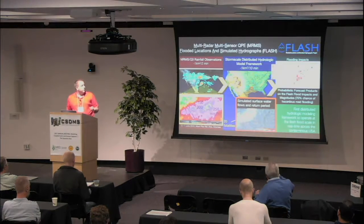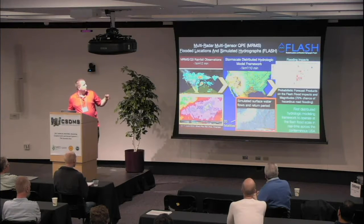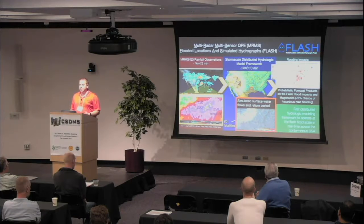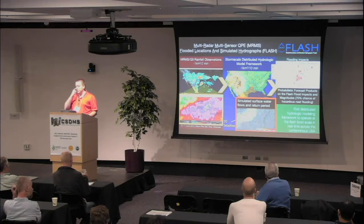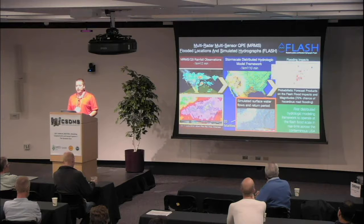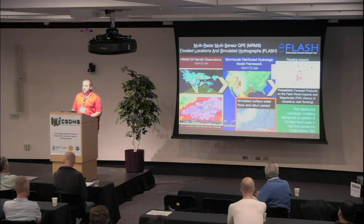This is the system we built for flash flood forecasting — it's called FLASH, which stands for Flood Locations and Simulated Hydrographs. On the left, we use the MRMS — Multiradar Multisensor — Q3 (QPE version 3) rainfall observations at 1 kilometer every 2 minutes. We built a hydrologic model that takes these rainfall estimates and propagates them forward into a streamflow forecast to produce flood forecasting. To do that, we built the Storm-Scale Distributed Hydrologic Modeling Framework, which is EF5, and we're taking this further now.